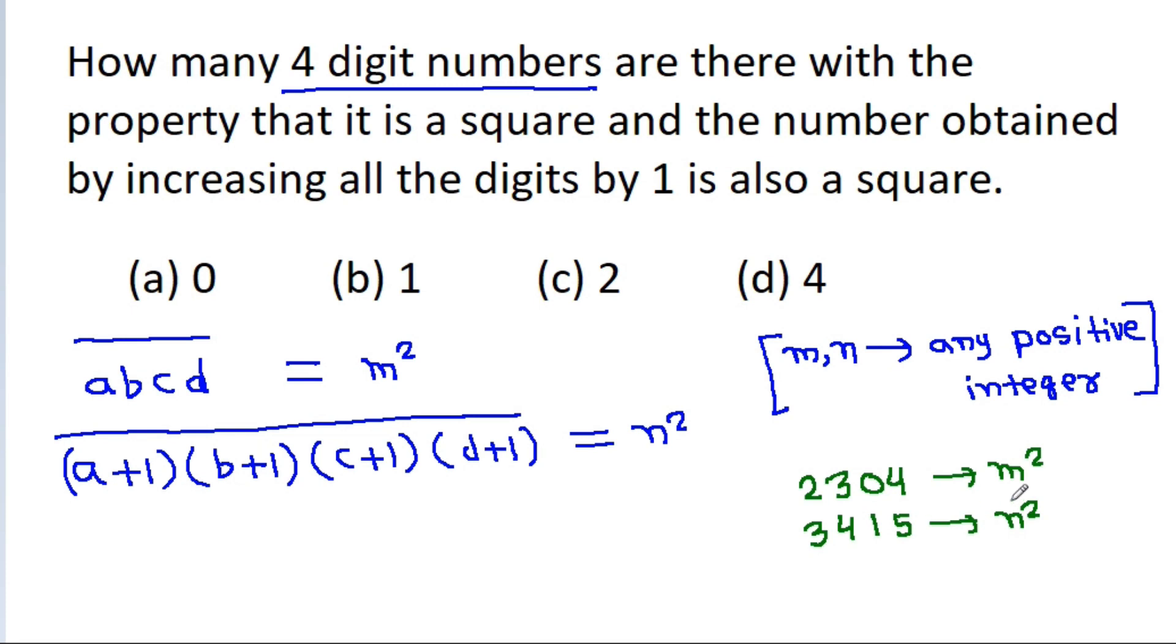And if we subtract M squared from N squared, N squared minus M squared, then it will be equal to 1, 1, 1, 1 because 5 minus 4 is 1, 1 minus 0 is 1, 4 minus 3 is 1, and 3 minus 2 is 1.